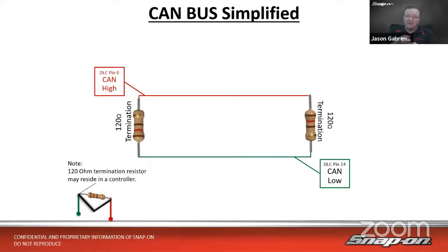When we inspect the CAN data bus, here's an example of a good pattern. There are two different signaling levels: two and a half volts is the idle state — not transmitting data. When it transmits, it goes up from two and a half volts about a volt, to around three and a half volts on the high side, and comes down about a volt on the other side. So we see that two to two-and-a-half volt range in between — that is our data packet. We're looking at this on a 100-microsecond scale, meaning 100 millionths of a second from zero to 100, and that's on pins 6 and 14.